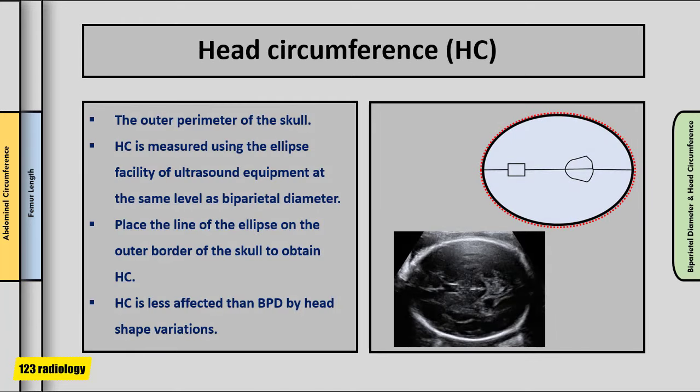Head circumference is the outer perimeter of the skull. It is measured using the ellipse facility of ultrasound equipment at the same level as the biparietal diameter, placing the line of the ellipse on the outer border of the skull. Head circumference is less affected than biparietal diameter by head shape variations and fetal presentation, and is therefore preferred as a more valuable measurement in assessing gestational age.